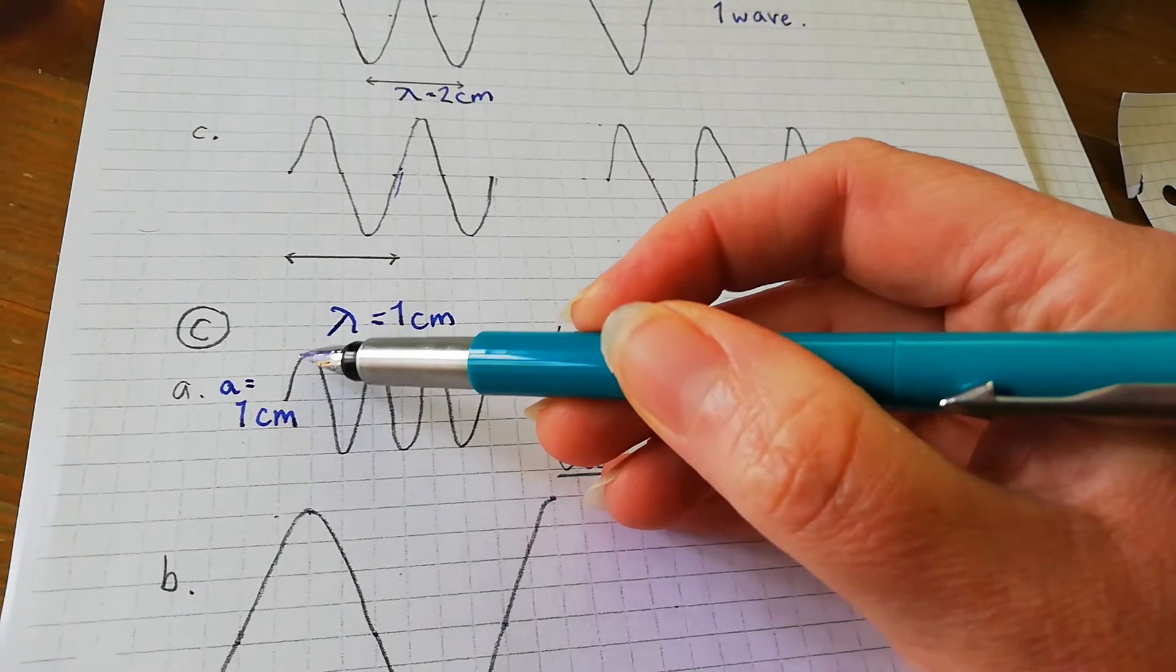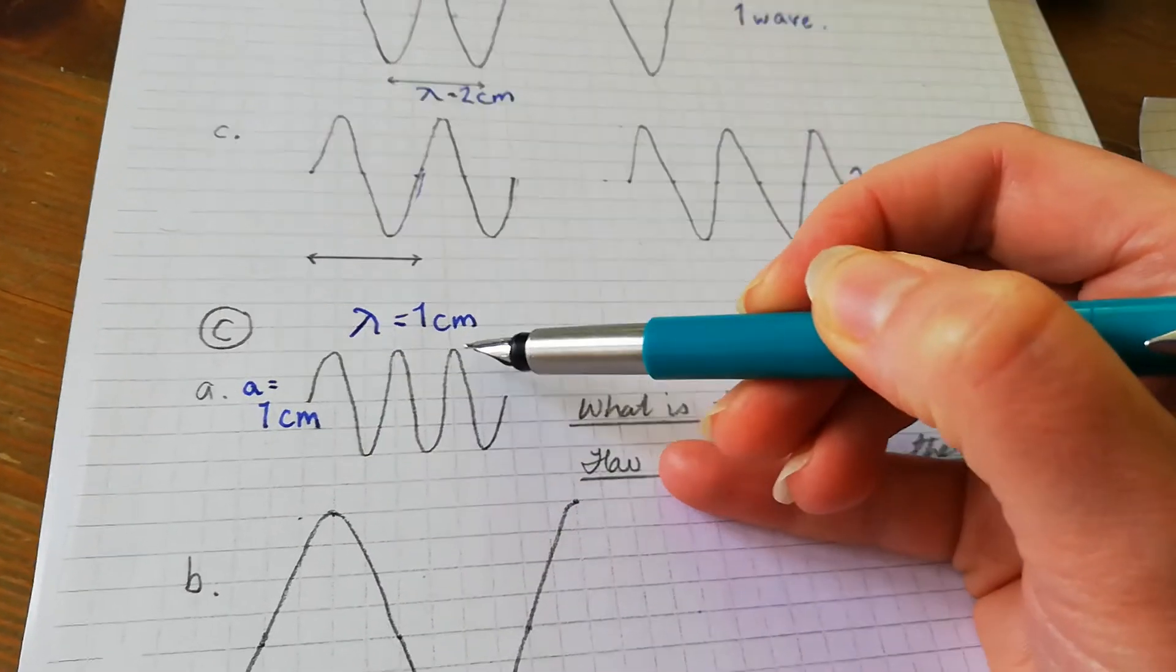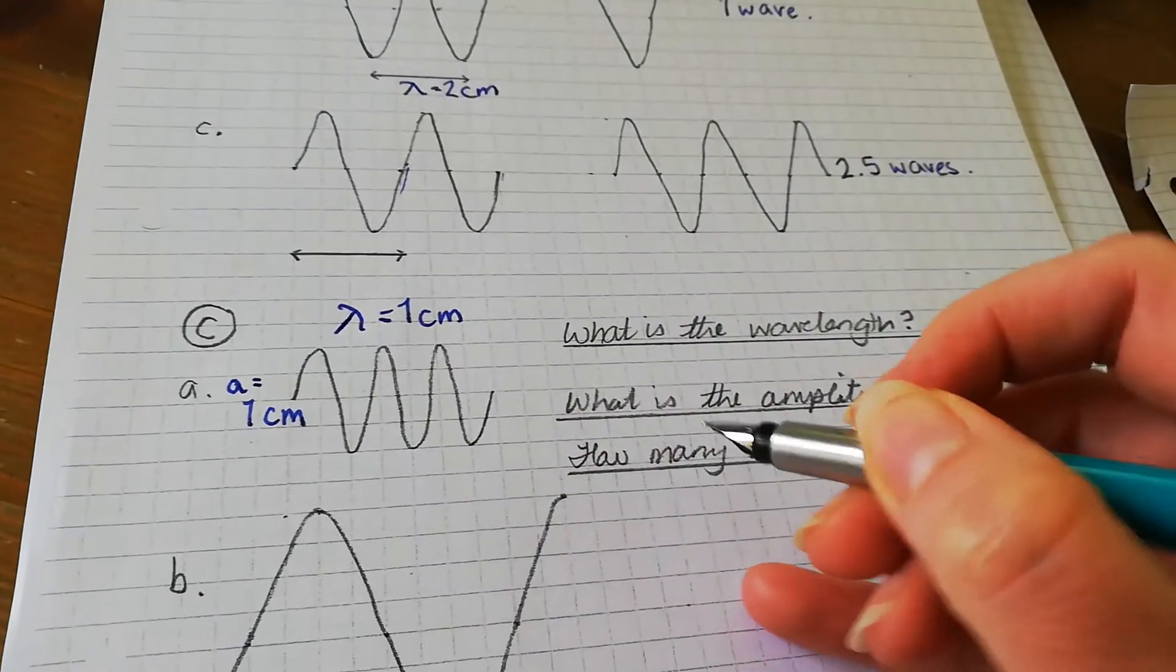How many waves are there? Well, we're going to use the pattern repeat method, so that's one, two. There are going to be three waves.